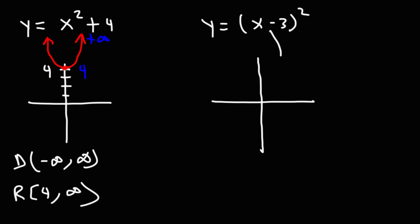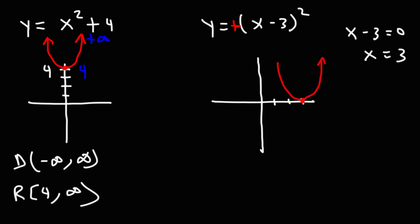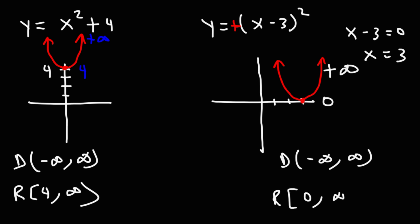For the next one, this is going to shift 3 units to the right. If you set the inside equal to 0, you'll get x is equal to 3. So the vertex will be at positive 3 on the x-axis. And because this is positive x squared, the graph is going to open upward. The domain will still be negative infinity to infinity, but the range is going to be different — the lowest y value is 0 and the highest is infinity, so it's going to go from 0 to infinity.